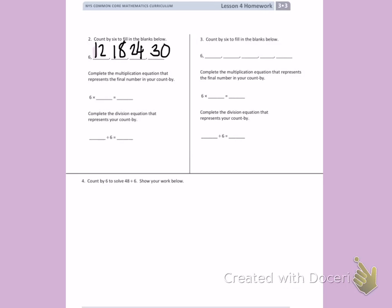Complete the multiplication equation that represents the final number in your count by. I am counting by 6. I counted by 6 one, two, three, four, five times. So my count by is representing 6 times 5. My total for 6 times 5 is 30.